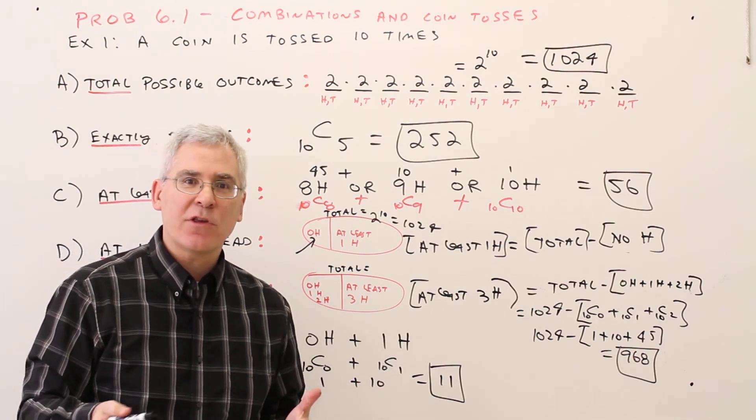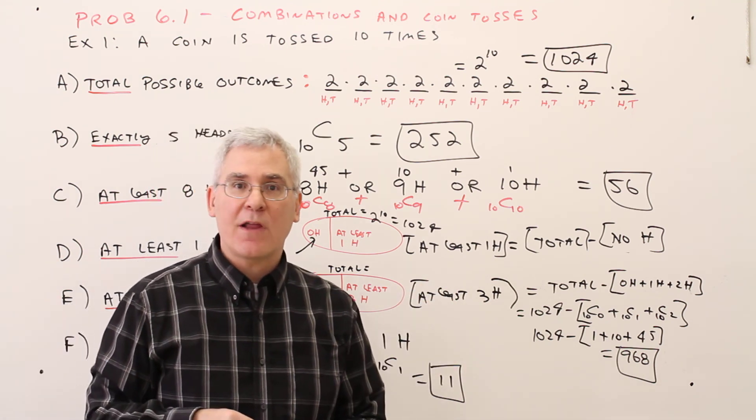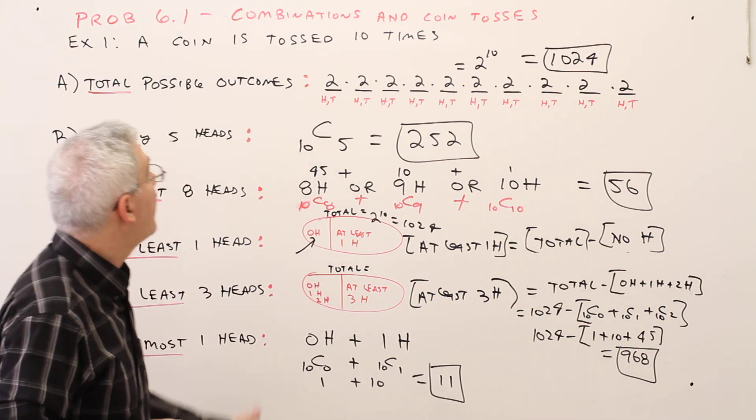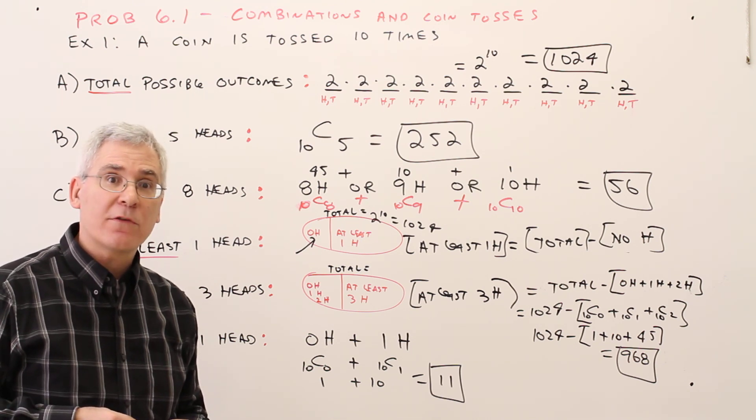And again, with combinations there's symmetry, as we learned in Pascal's Triangle. So feel free to use whatever technique you want. So there you have it, how to use combinations in conjunction with coin tosses.